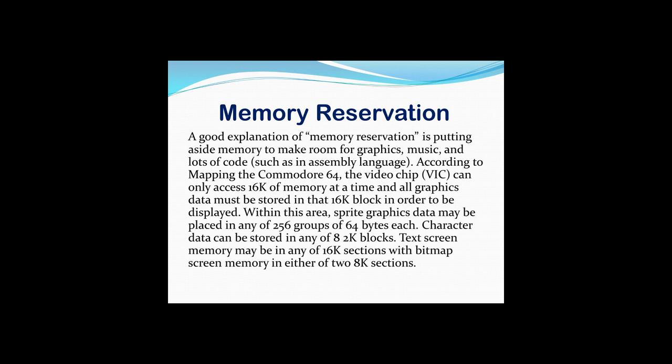Memory reservation is putting aside memory to make room for graphics, music, and lots of code in assembly language. According to the Commodore 64 map, the VIC chip can access 16K of memory at a time and all graphics data must be stored in that 16K block. Within this area, sprite graphics data may be placed in any of 256 groups of 64 bytes each, character data in any of the 8 2K blocks, text screen memory in any of the 16 sections, and bitmap screen memory in either of the 8K sections.